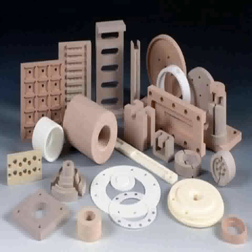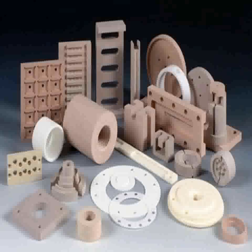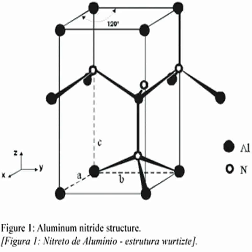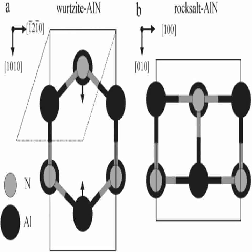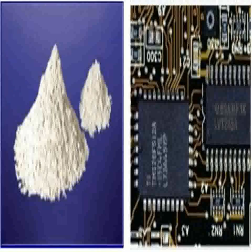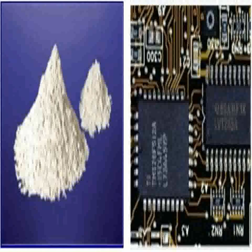Aluminium nitride has a hexagonal crystal structure and is a covalent bonded material. The use of sintering aids and hot pressing is required to produce a dense technical grade material. The material is stable to very high temperatures in inert atmospheres. In air, surface oxidation begins above 700 degrees Celsius, and a layer of aluminum oxide forms which protects the material up to 1370 degrees Celsius.